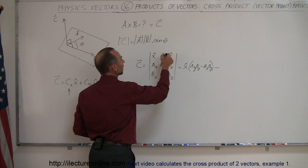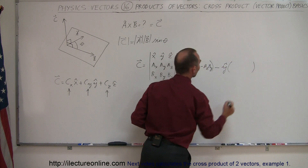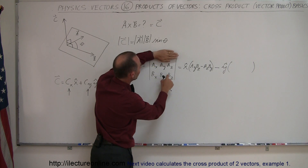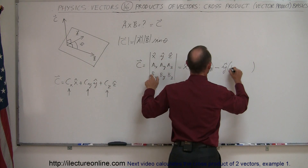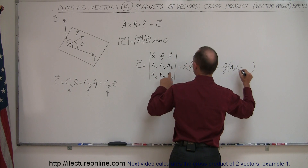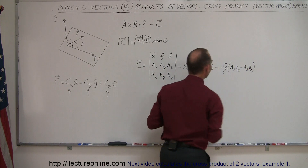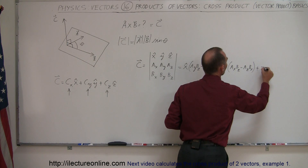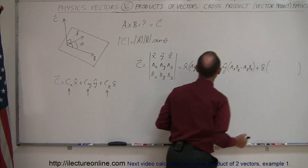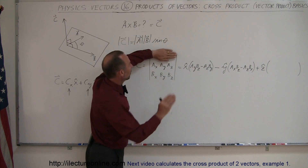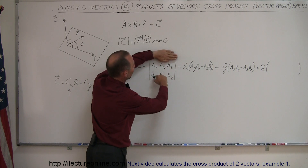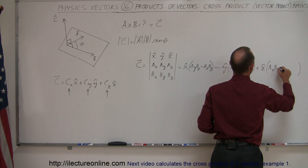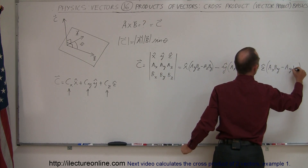The signs alternate plus, minus, plus. So we subtract the Y-direction term: Y hat times A sub X times B sub Z minus A sub Z times B sub X. Then plus the Z-direction term: Z hat times the remaining sub-determinant after blocking out the Z column, giving A sub X times B sub Y minus A sub Y times B sub X.